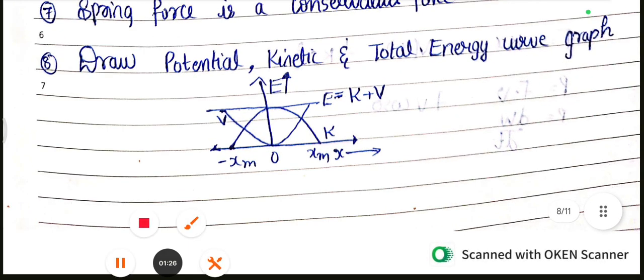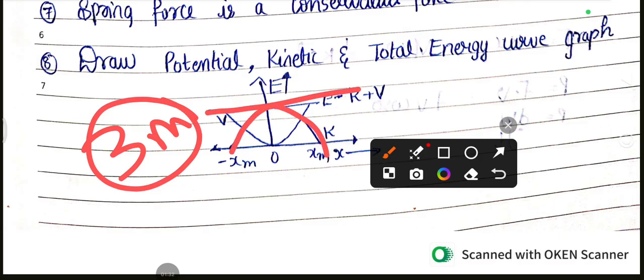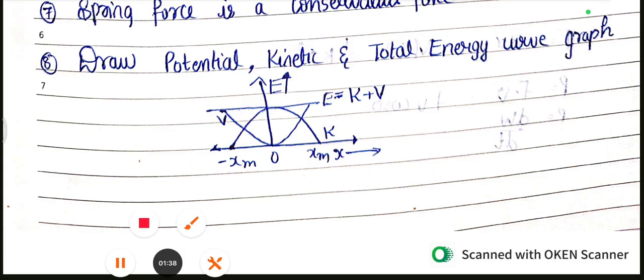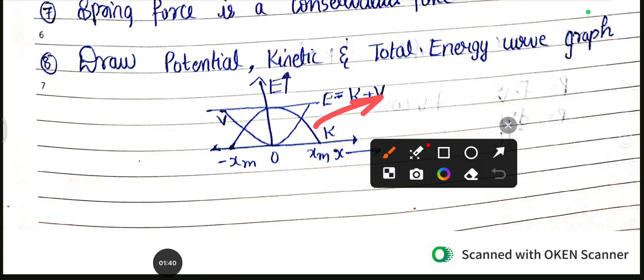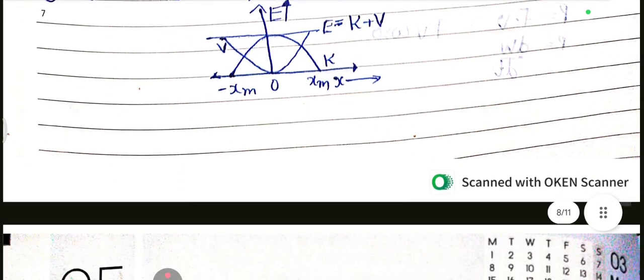Eighth question: this graph is directly worth 3 marks. If you look at this graph, you can see it as a graph. Or you can see it in MCQs. For example, you can see it in the KCET exam. This is A, B, and C. What is A, what is B, what is C - MCQs. So that's very important.